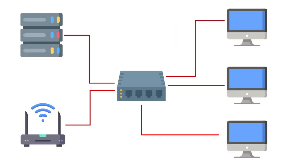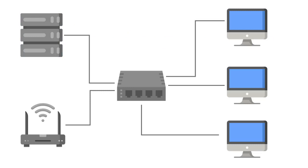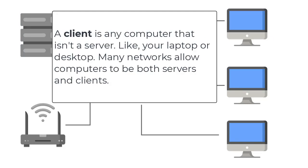Now, let's define each part of a typical network. A server is a computer with hard drives, printers, and resources that all the users on the network can use or share. Most organizations have dedicated servers, meaning they're only used for networking purposes. A client is any computer that isn't a server, like your laptop or desktop. Many networks allow computers to be both servers and clients.